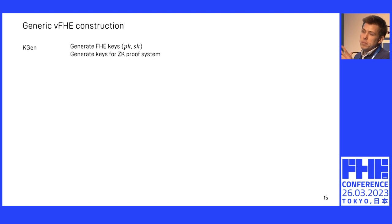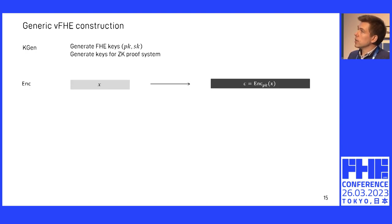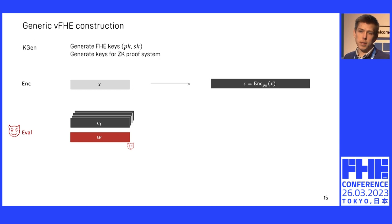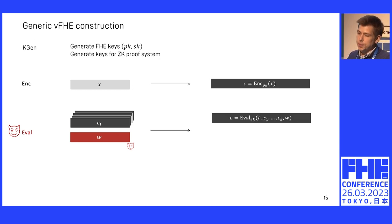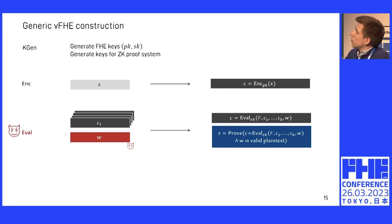With these three insights in mind, the construction is actually quite straightforward. The key generation is just a key generation phase for the FHE scheme and one for the ZKP scheme. The encryption is just a standard FHE encryption. The evaluation takes some ciphertexts from the client together with the plaintext inputs from the server that can be maliciously chosen. We do the FHE evaluation as before and then add a verification tag — a proof of correct evaluation and additionally a proof that W is a valid plaintext.